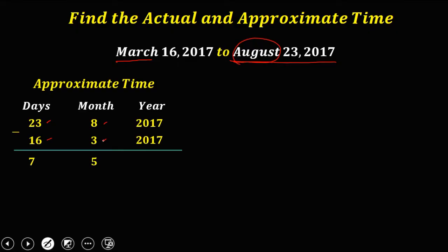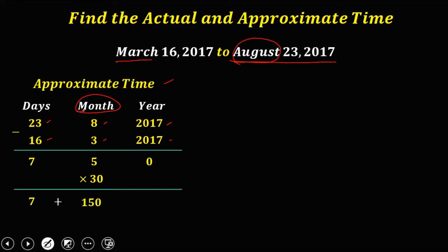...that's 5, and 2017 minus 2017 is 0. Since for approximate time we use 30 days per month, multiply 5 by 30 and add 7. So 5 times 30 equals 150, and 7 plus 150 gives us 157 days for the approximate time.